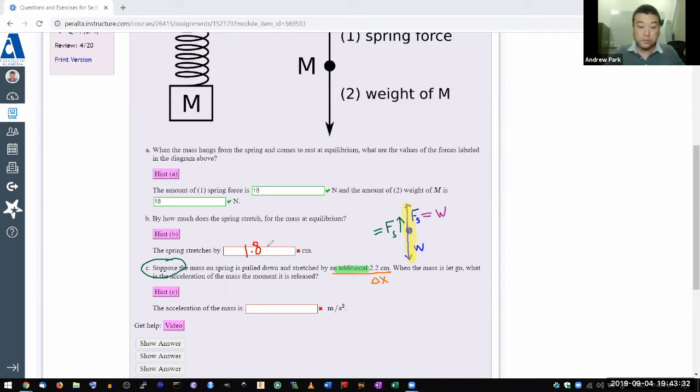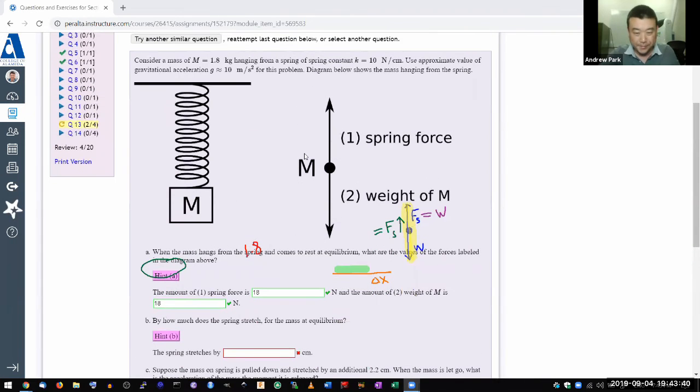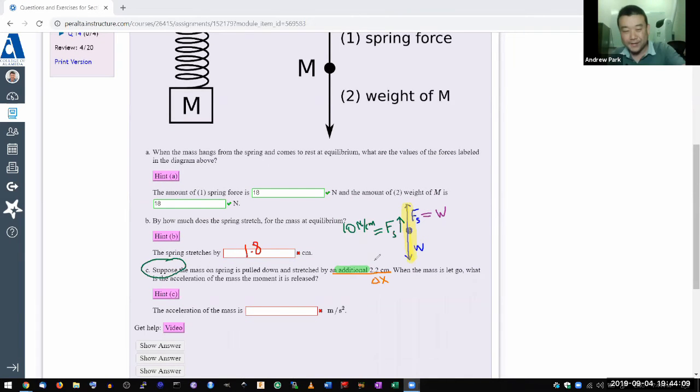You can plug in the numbers to figure out what the spring force is. It's going to equal the spring constant, 10 newton per centimeter, multiplied by the additional distance, 2.2 centimeter. You know you did it right when the units cancel out and you get newtons, which is the correct unit for force. Multiply them, 2.2 times 10, you get 22, so this spring force must be 22 newtons.